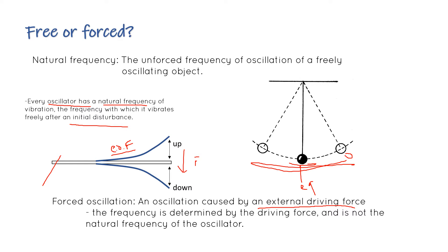A forced oscillation is an oscillation caused by an external driving force. The frequency is determined by the driving force - the more driving force you apply, the higher the frequency. It is not natural frequency, though after the initial movement it may transition into natural frequency. At A-level, if asked what forced oscillation is, the answer is: an oscillation caused by an external driving force.